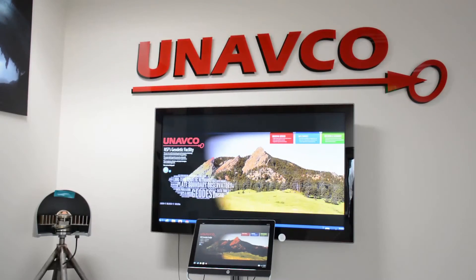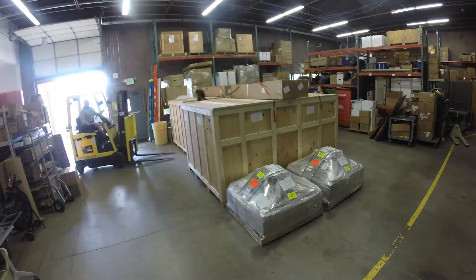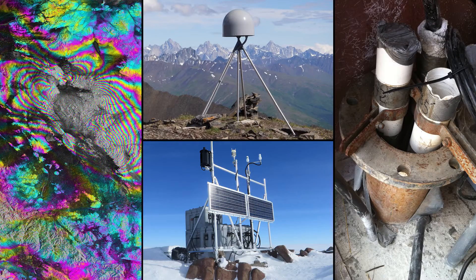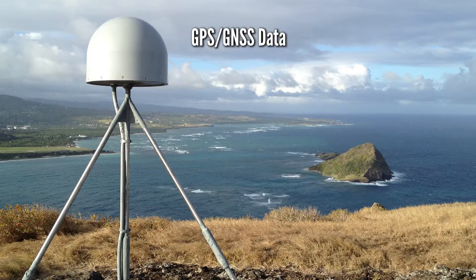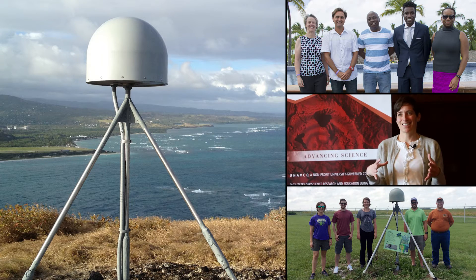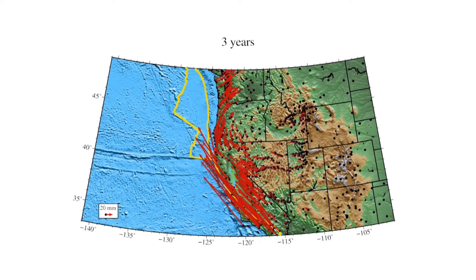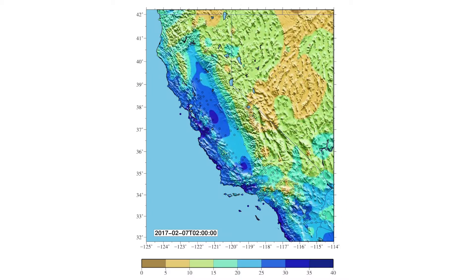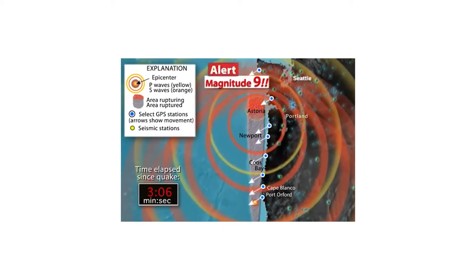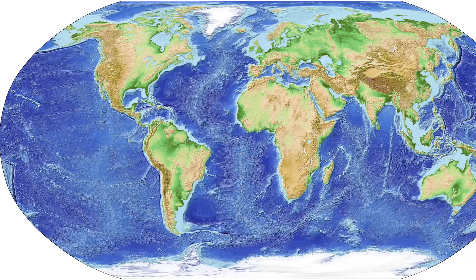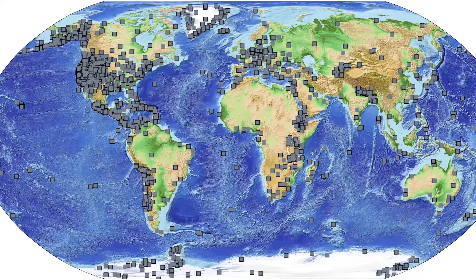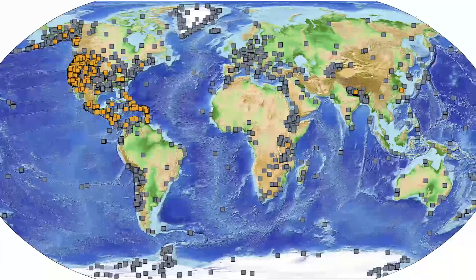On behalf of the National Science Foundation, UNAVCO operates a geodetic facility that provides a variety of open access datasets, including GPS. With daily or hourly GPS data, UNAVCO community scientists can study deformation at active plate boundaries or investigate the Earth's atmosphere. Real-time GPS has applications to earthquake early warning systems. At UNAVCO, we archive and distribute GPS data from across the world, with real-time data available on select stations.